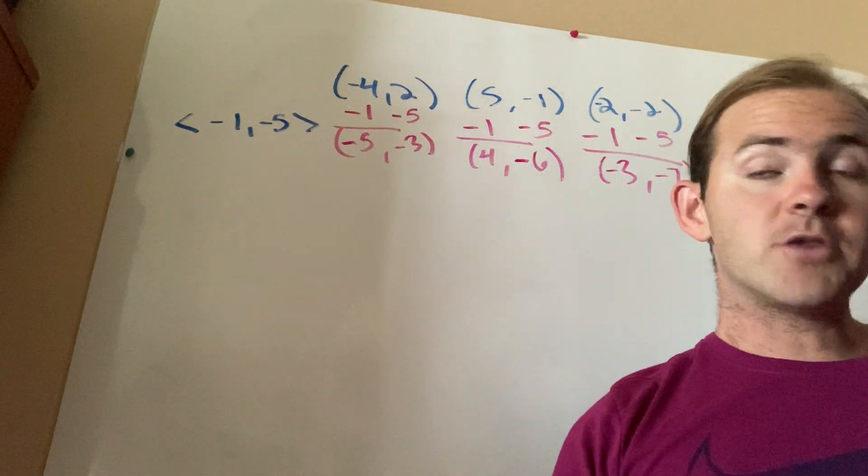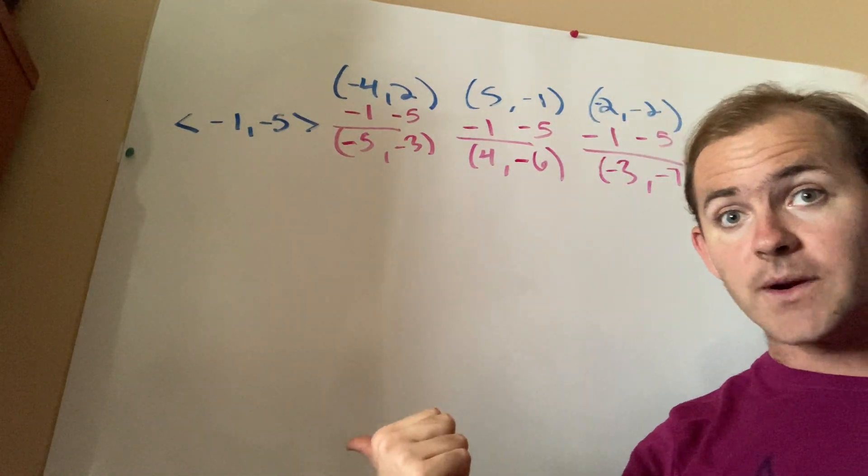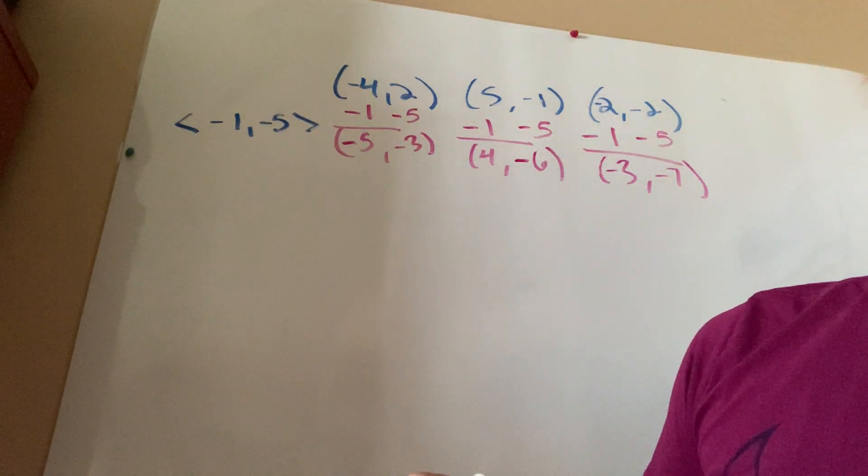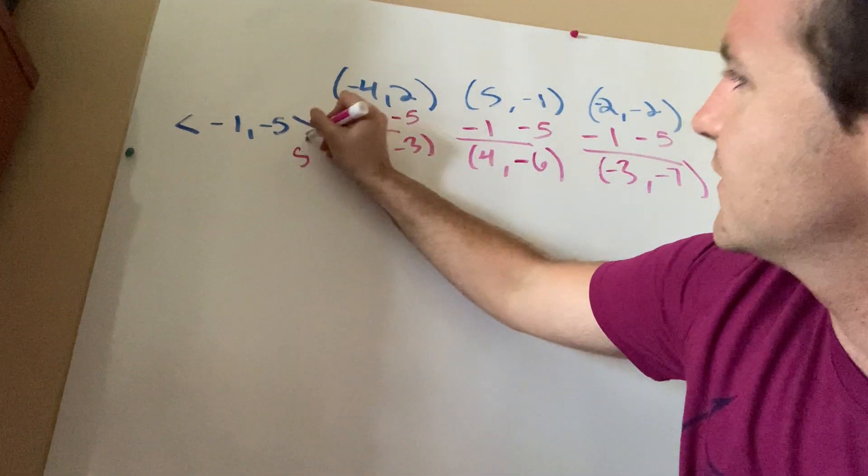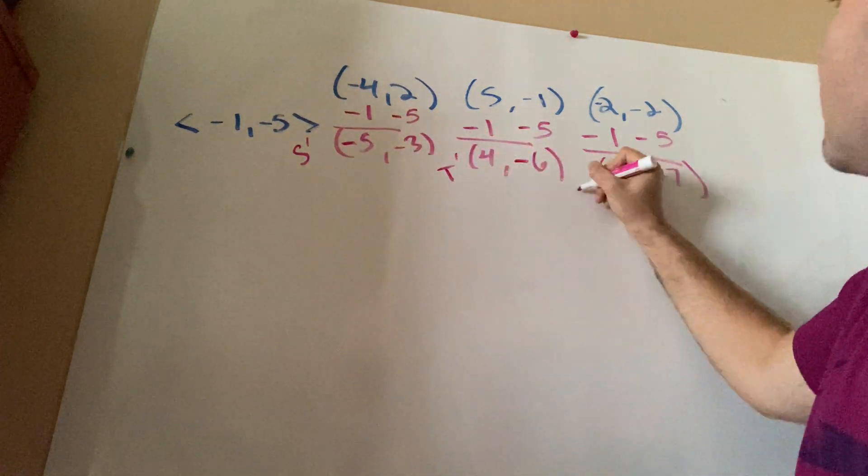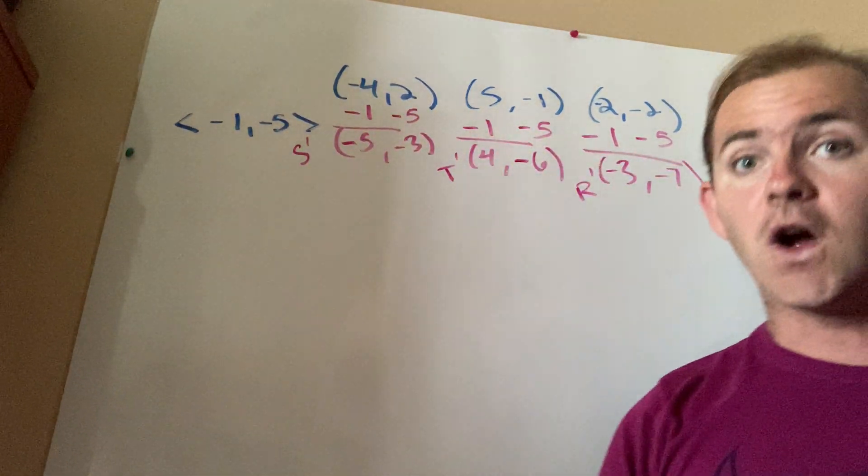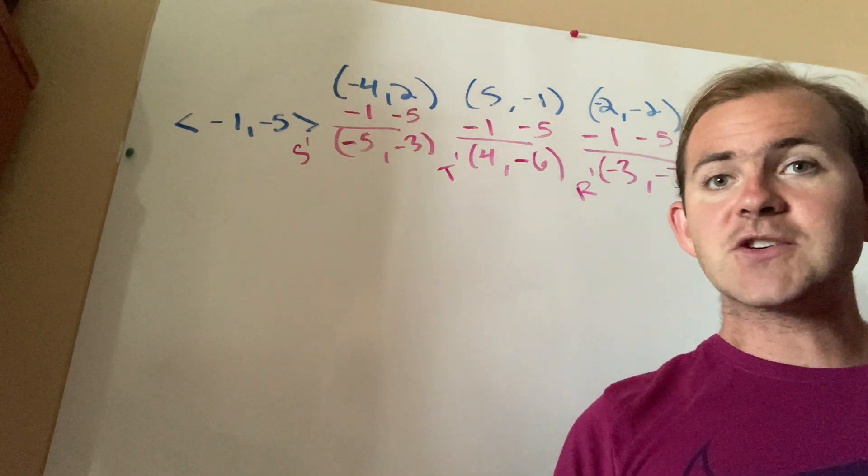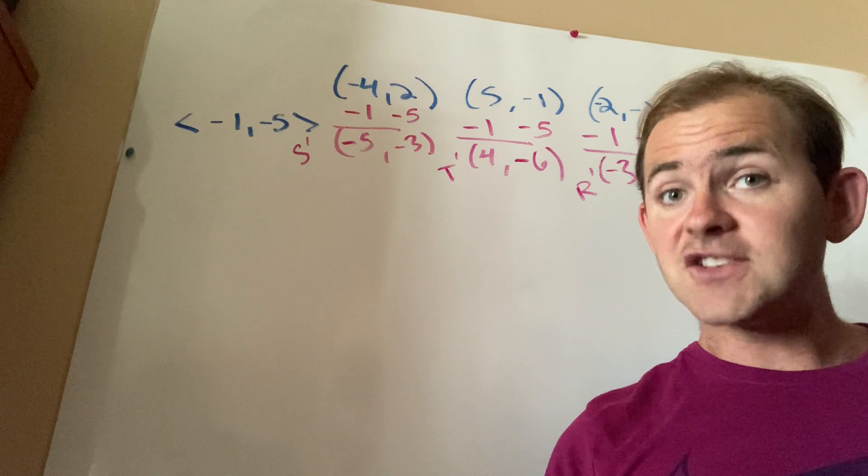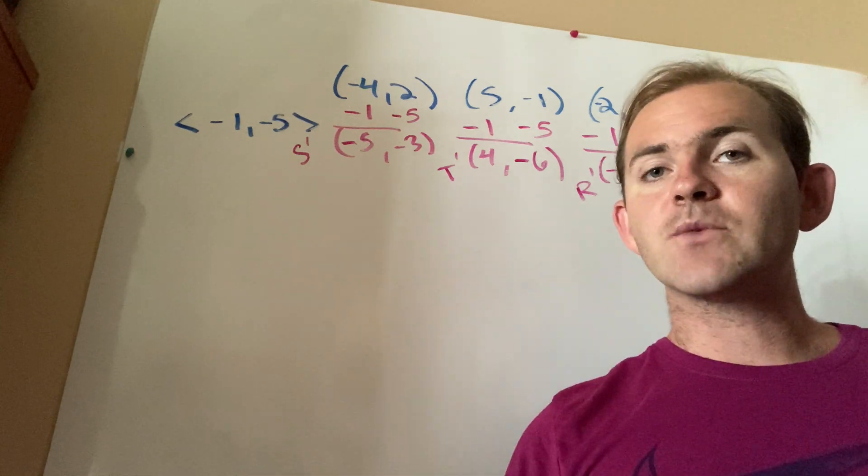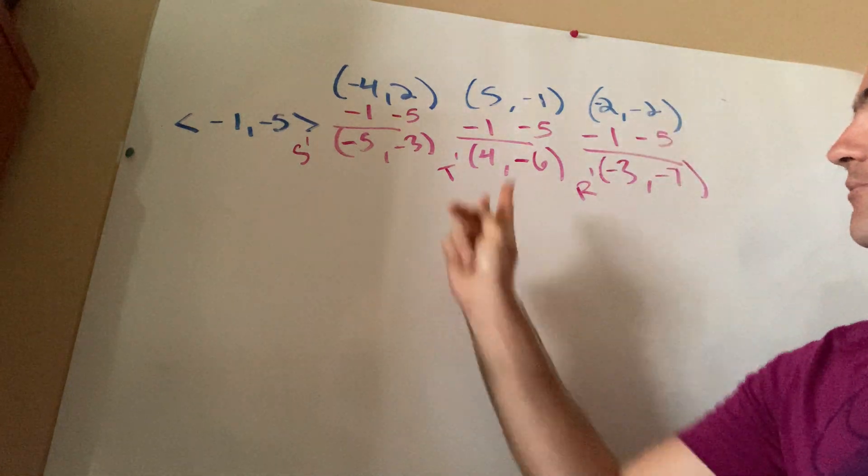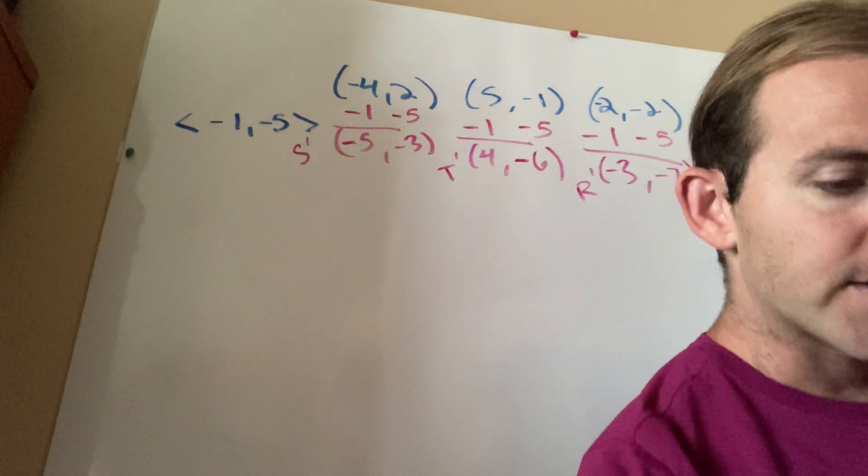So if you wish, you're welcome to go ahead and actually graph those coordinates out and label them S prime, T prime, and R prime. And you could do that. But if you're the kind of person that's looking at this from an efficiency standpoint, the most efficient way to actually get where the coordinates are going to be is to simply apply the rule on the coordinates themselves.